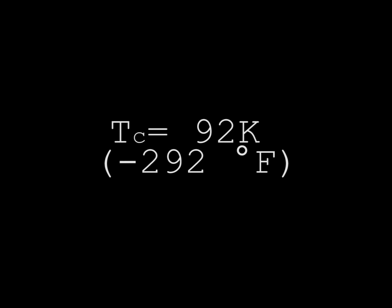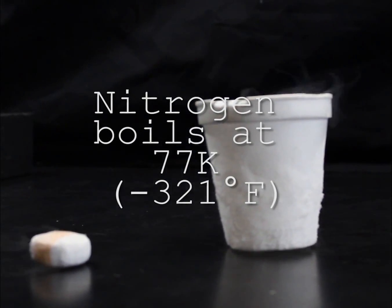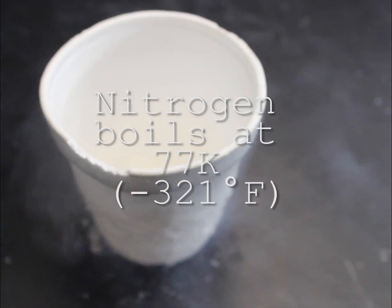In YBCO, the critical temperature is 93 Kelvin. We get it cold by immersing the superconductor in liquid nitrogen, which has a boiling point of 77 Kelvin.